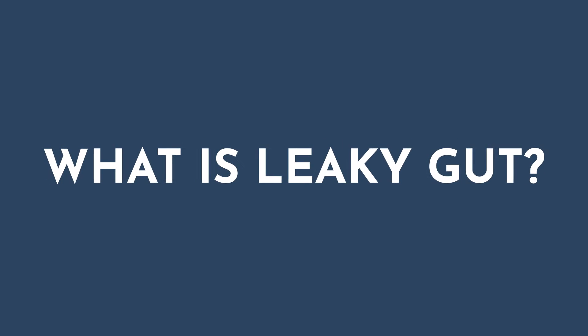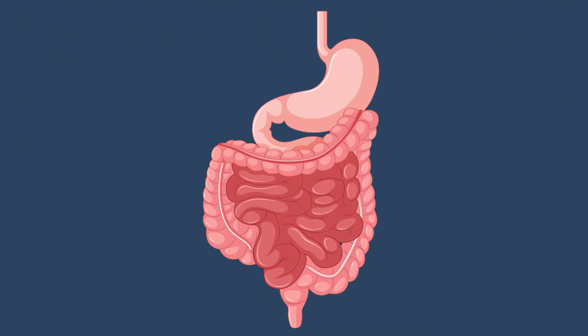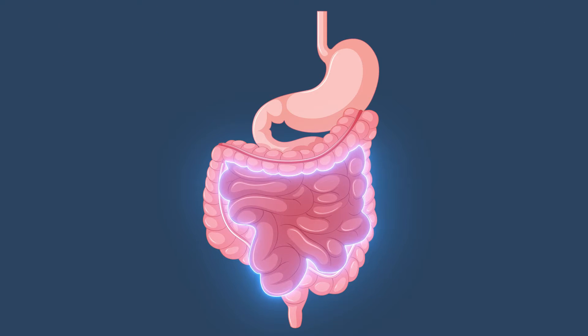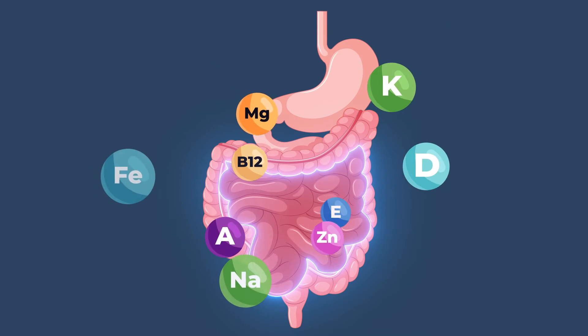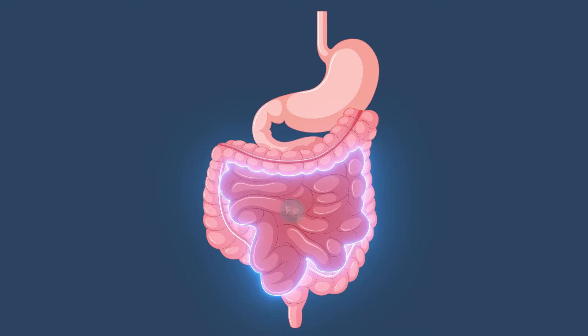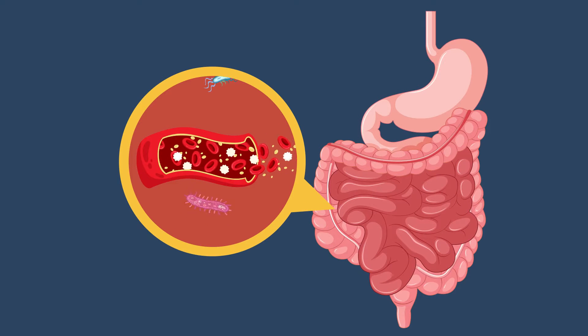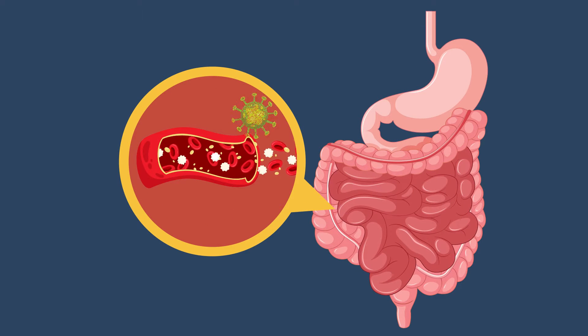So what is leaky gut? Medically speaking, this is referred to as intestinal permeability. Essentially, we have our gut lining, which is our protective barrier. It allows us to absorb the nutrients that we're consuming within the small intestine and also prevent things from moving into the bloodstream like pathogens, toxins, and undigested food. When the gut lining becomes leaky, things enter into the bloodstream, triggering an immune response. This can create a localized or systemic inflammation that could present in many different ways, from chronic pain to autoimmune disease.